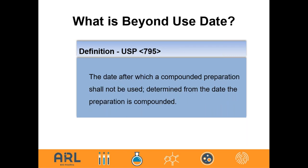The other definition, found in USP 795, states the date after which a compounded preparation shall not be used, determined from the date the preparation is compounded. Essentially it's just telling you not to use the substance after a certain date. But the prior definition is preferable because it focuses more on the science of the product, which we'll be discussing in detail today.